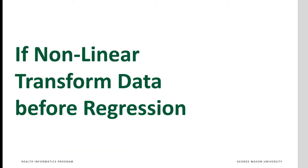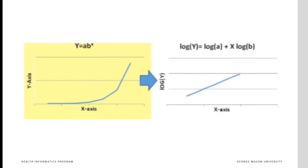If the relationship between dependent and independent variables is not linear, then data should be transformed before completing the regression. If the dependent variable is a function of a constant to the power of the independent variable, then the log of the dependent variable would be linearly related to the independent variable. The left-hand side shows the relationship between y and x before transformation — it's not linear. The right-hand side shows the same relationship but now between log of y and x. Now it's linear. This example shows the importance of transforming the data before doing a linear regression.